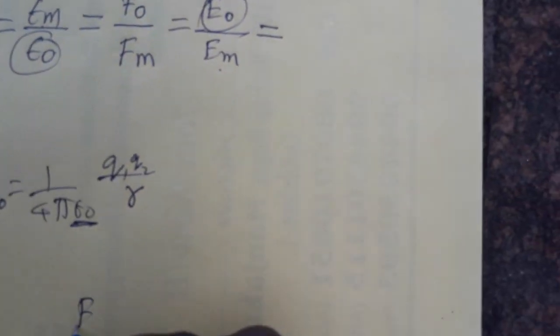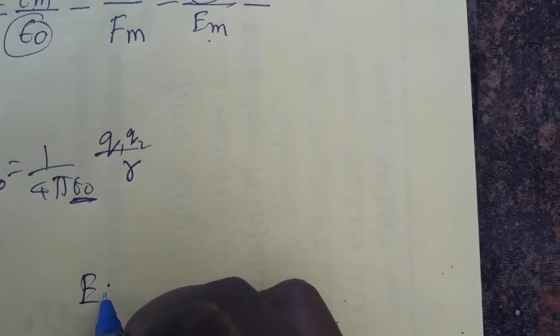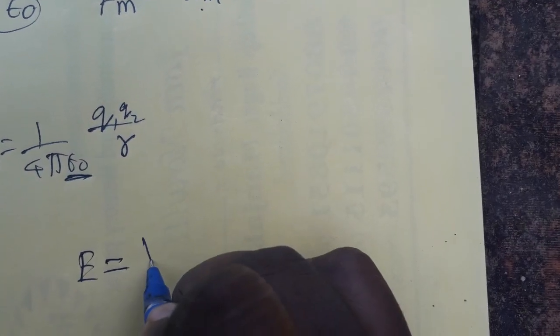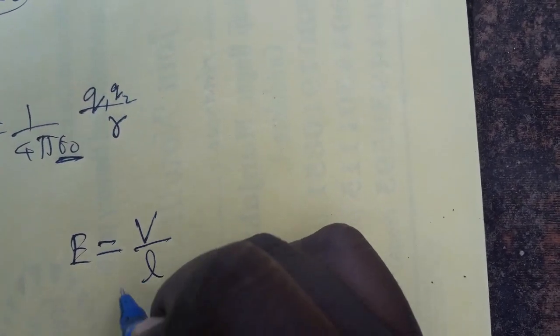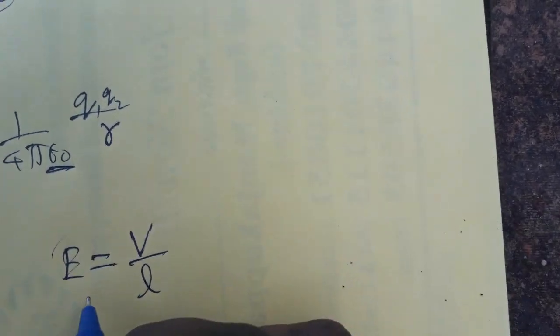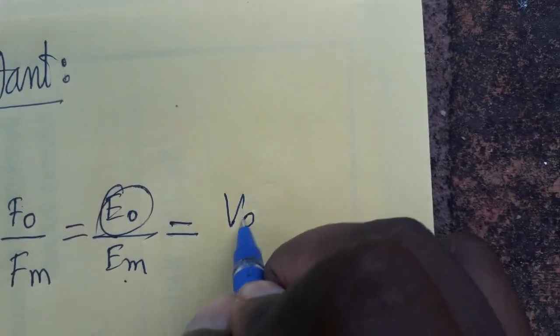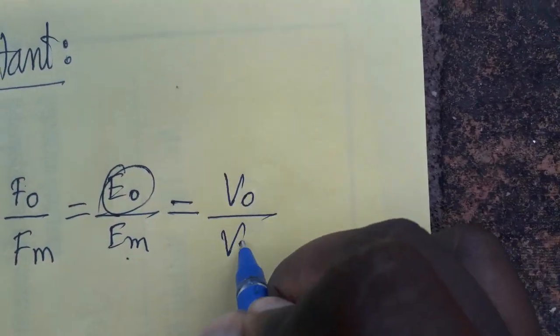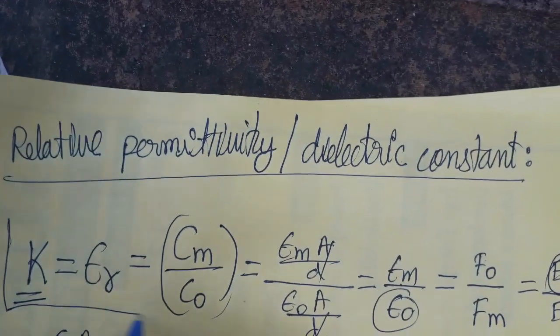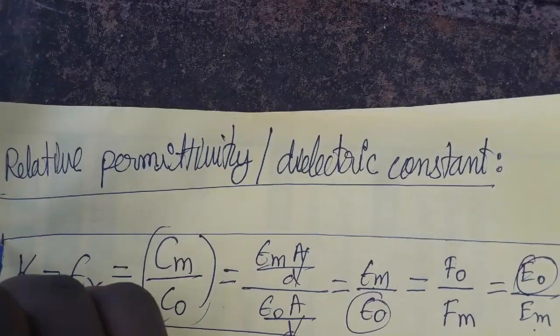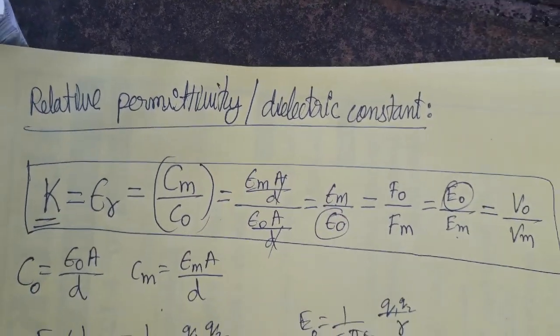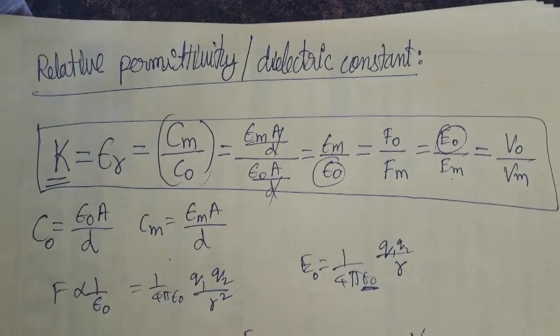Now, how are E and V related? Electric field equals voltage per unit length, so E = V/l. Therefore, E₀ = V₀/l and Eₘ = Vₘ/l. This gives a combined formula relating dielectric constant and relative permeability. Thank you.